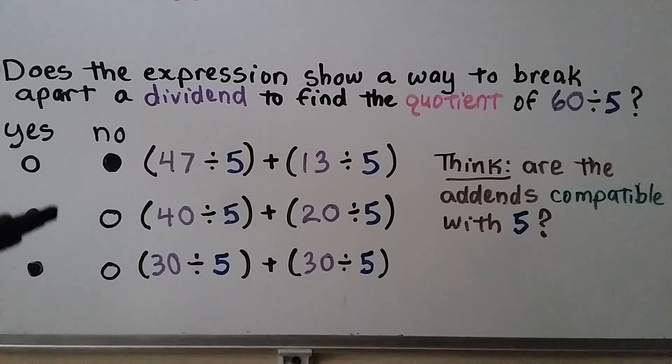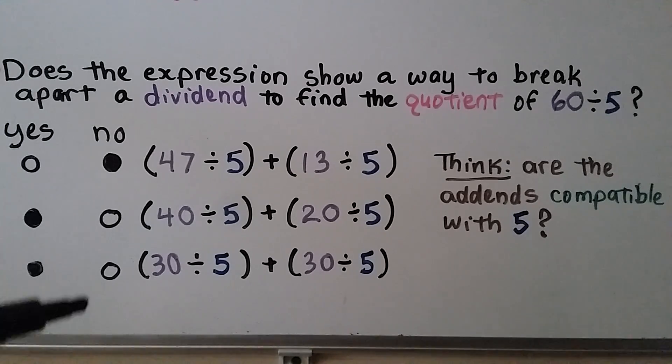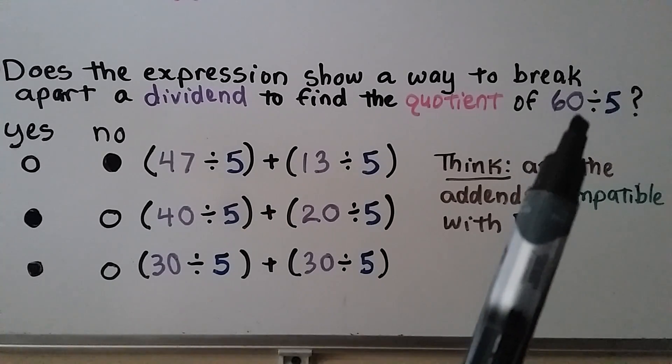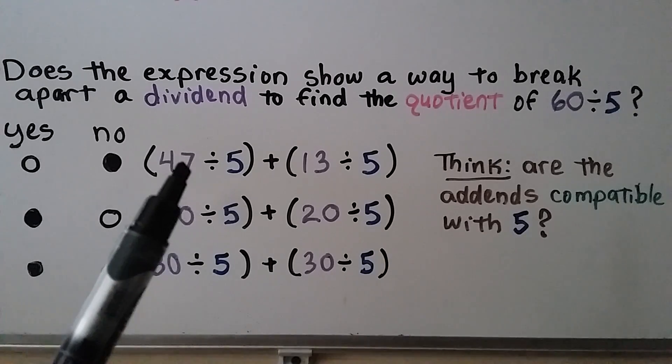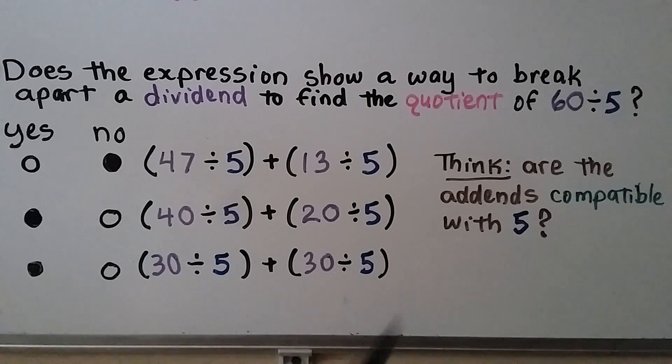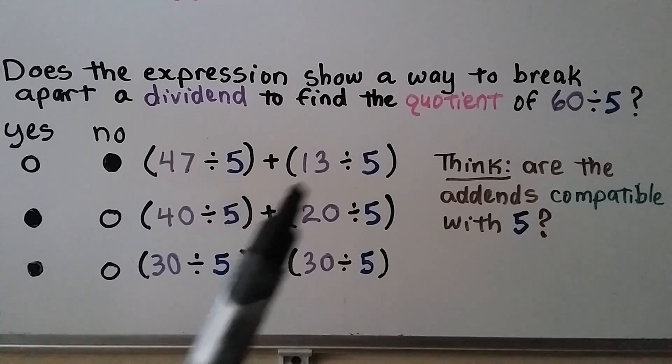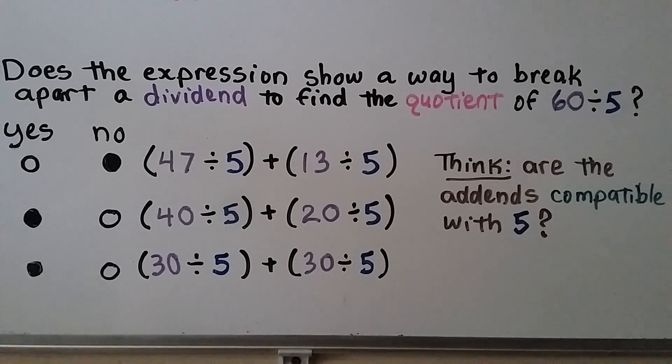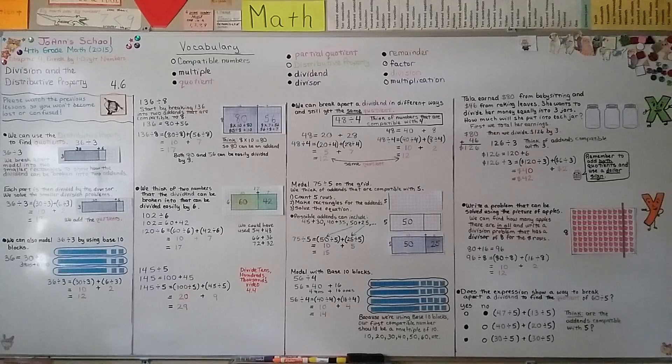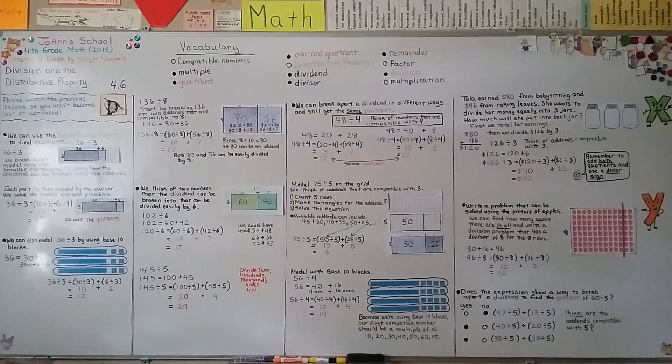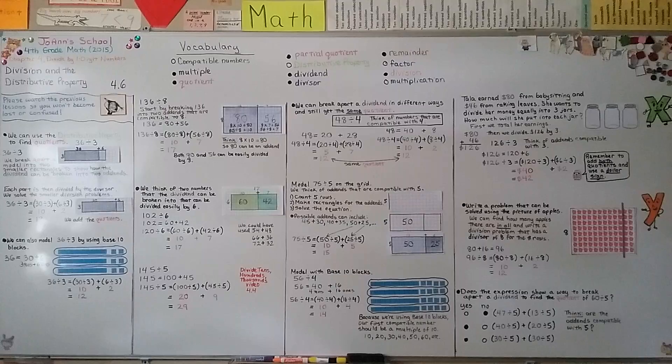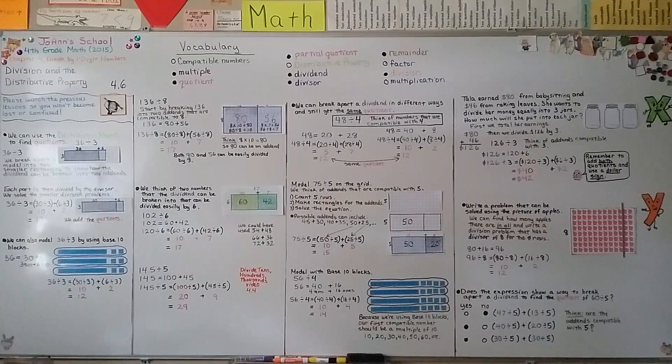So these two expressions would be a way to break apart the dividend 60 for 60 divided by 5. But the first one wouldn't because these addends are not compatible with 5. They do make the sum 60, but they're not compatible with 5. So make sure when you're using this strategy that your two addends are compatible with the divisor and they total the amount of the dividend.